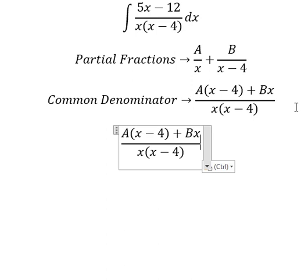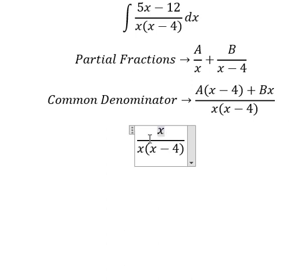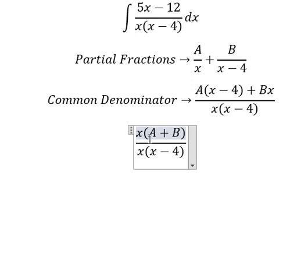Now we need to arrange based on the terms of x. So for x we have A and B. For the constant terms we have negative 4A.